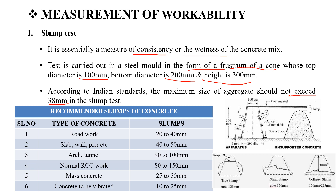From the slump test, we obtain three types of slumps. The first is the true slump, which is up to 125 mm height. The second is the shear slump, up to 150 mm height. The third type is the collapse slump.